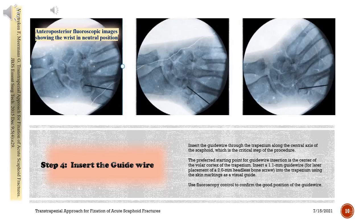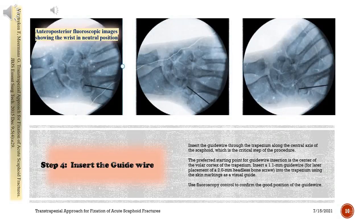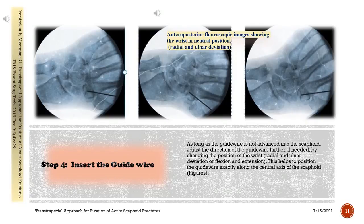Step 4: Insert the guide wire through the trapezium along the central axis of the scaphoid — this is the critical step of the procedure. The preferred starting point is the center of the volar cortex of the trapezium. Insert a 1.1 mm guide wire, for later placement of a 2.0 mm headless bone screw, into the trapezium using the skin markings as a visual guide. Use fluoroscopy to confirm good position. As long as the guide wire is not advanced into the scaphoid, adjust its direction by changing the position of the wrist — radial and ulnar deviation or flexion and extension — to position it exactly along the central axis of the scaphoid.